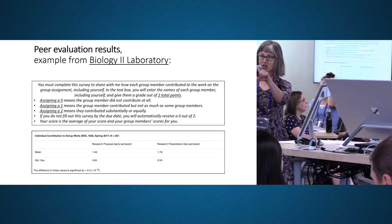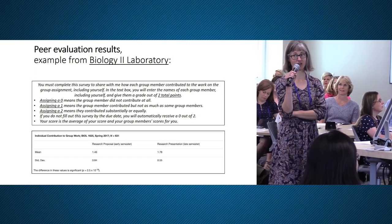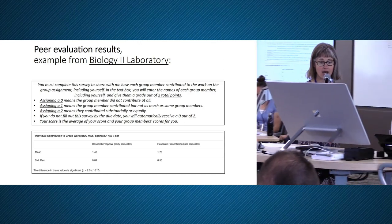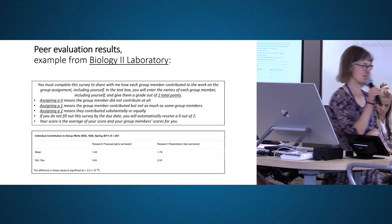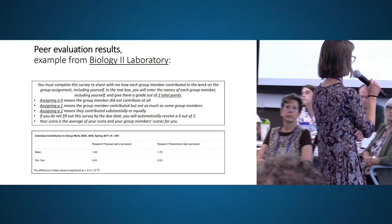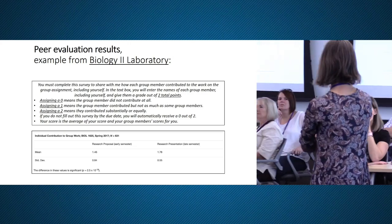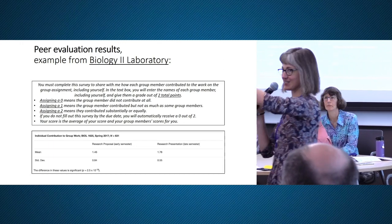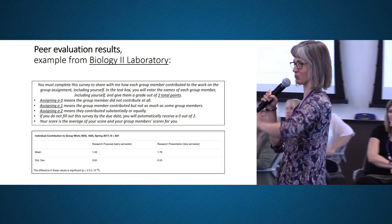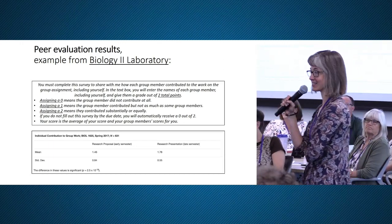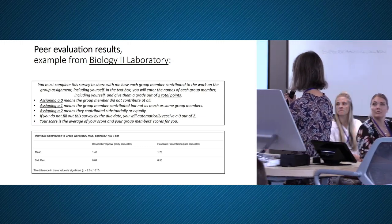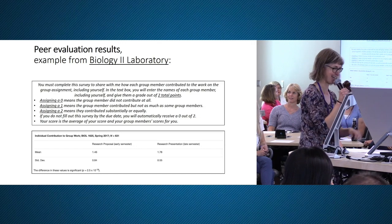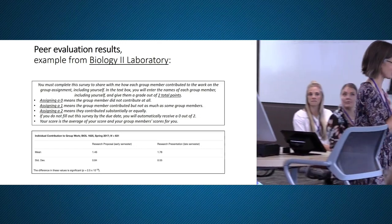A couple years ago in 2017, we had a very simple peer evaluation with a grading scale of zero to two. Our sample size was N equals 631. Looking at the means across time — 1.46 to 1.78 — it was nice to see improvement in the average individual contribution score over the semester. Thanks for listening, and I'd love to hear your success stories with group work.